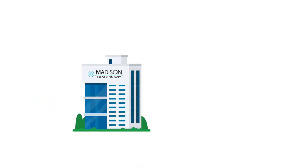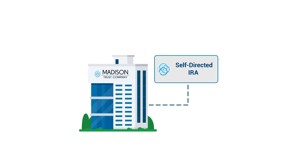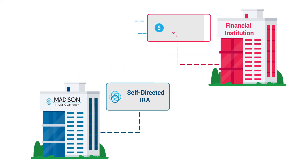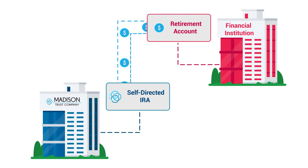One: open and fund a self-directed IRA. First, you'll open a self-directed IRA by filling out Madison's easy online application. Once your self-directed IRA is established, you can fund your account by transferring or rolling over funds from a previous retirement account, or making an initial contribution.